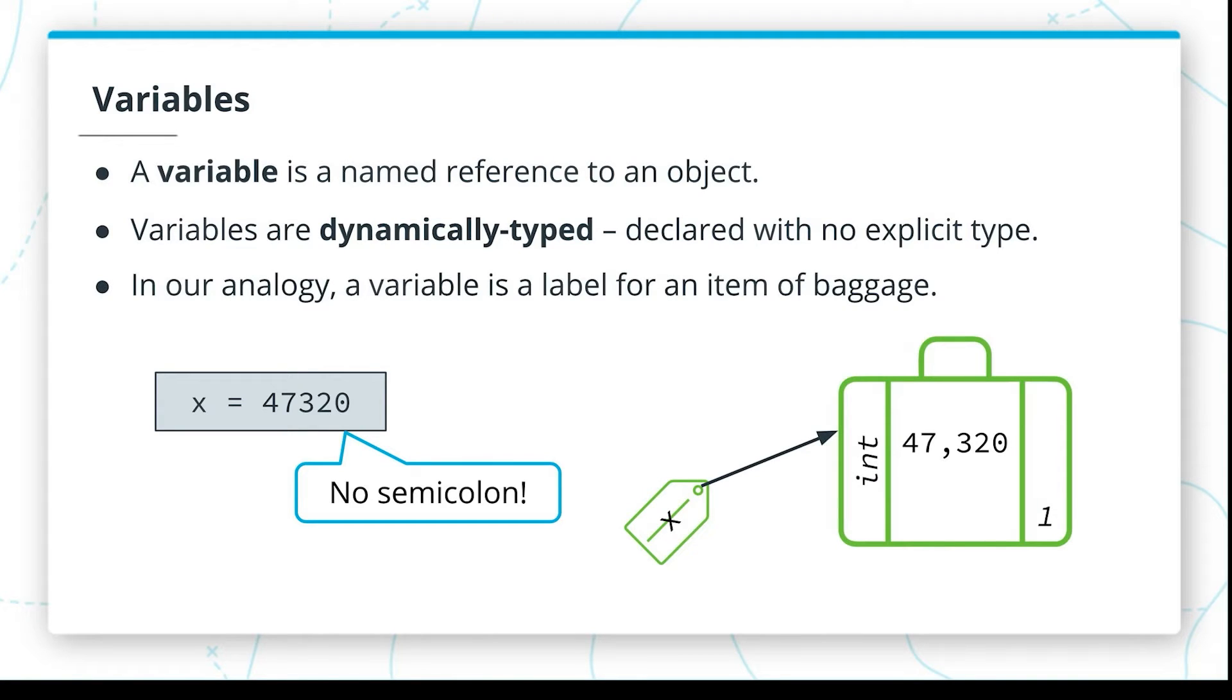So in the language of our analogy, a variable is a label for an item of baggage. It's a label with the name x on it that's referring to some Python object that itself has the value and the type and any other important metadata associated with that object.